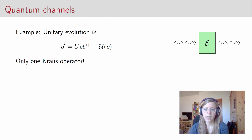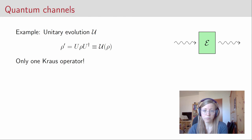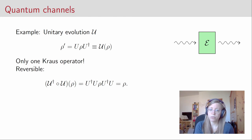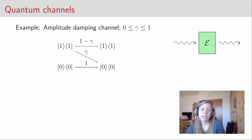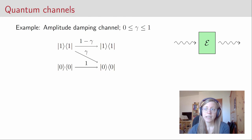Let's look at examples of channels. A very simple example is unitary evolution, which describes the evolution of a closed system. Here you have only one Kraus operator — a unitary U — and you apply it to your state: E(rho) = U rho U†. Unitary evolutions are always reversible: the inverse is U†, and since U† U = I, the concatenation gives back the identity. What about evolutions of open systems? One example is the amplitude damping channel, which describes what happens when you have a two-level system like an atom with a ground state |0> and an excited state |1>.